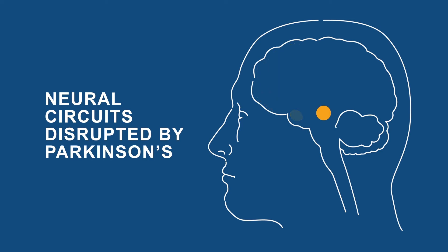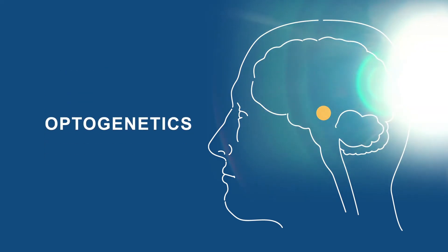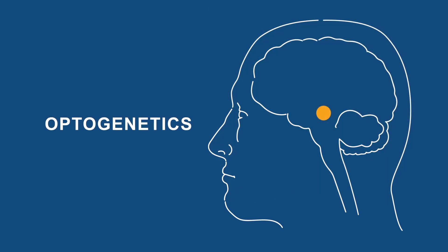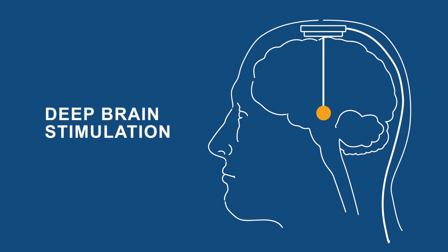We could imagine one day using optogenetics to treat neurological disorders like Parkinson's disease. For example, when medicines no longer help, some Parkinson's patients undergo deep brain stimulation, where electrodes implanted in specific regions of the brain activate the regions to improve symptoms like tremor.